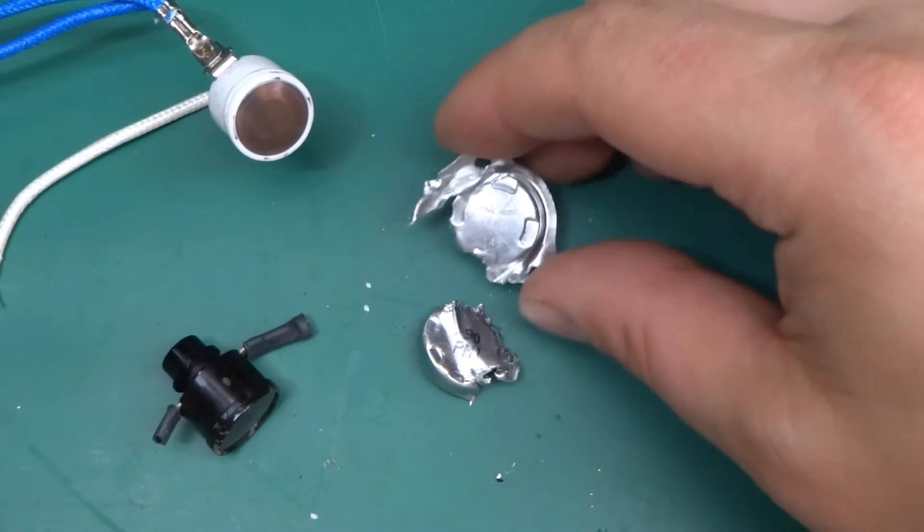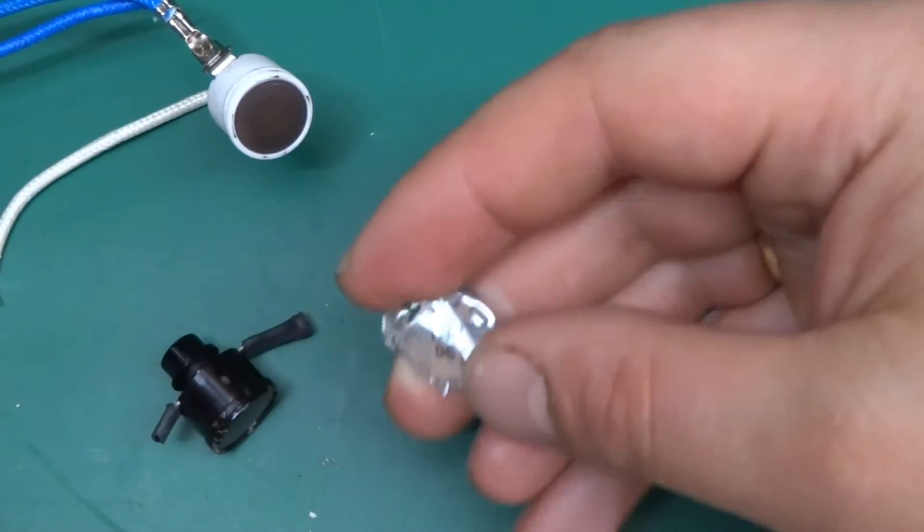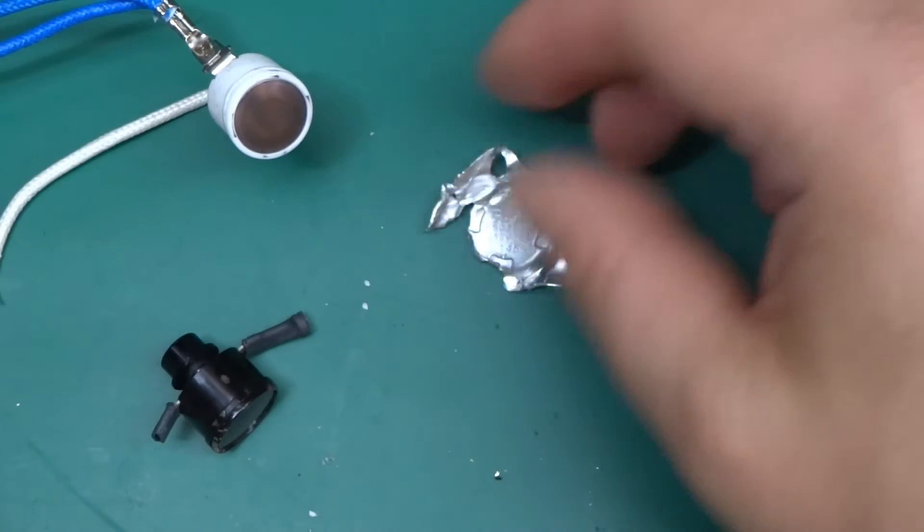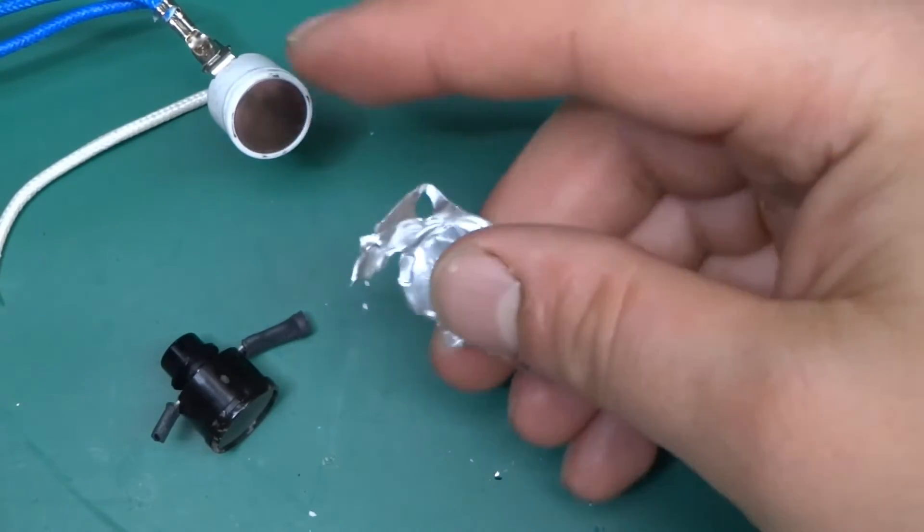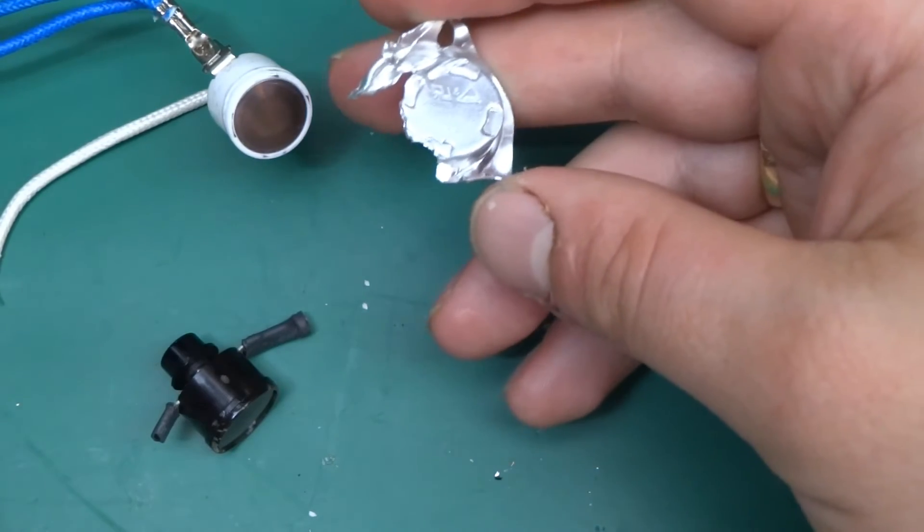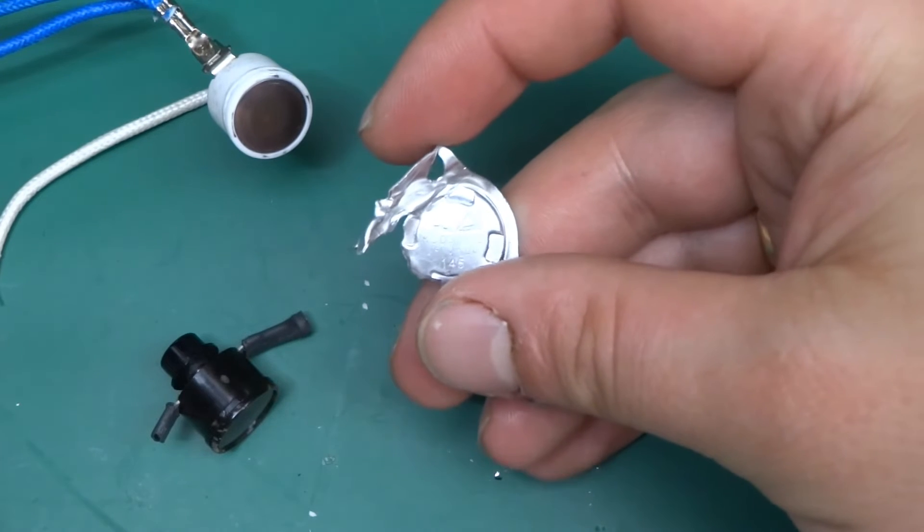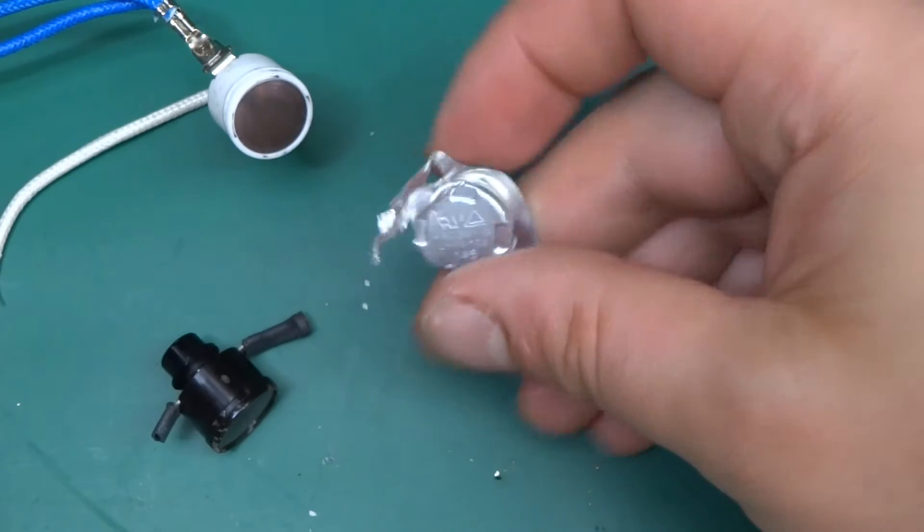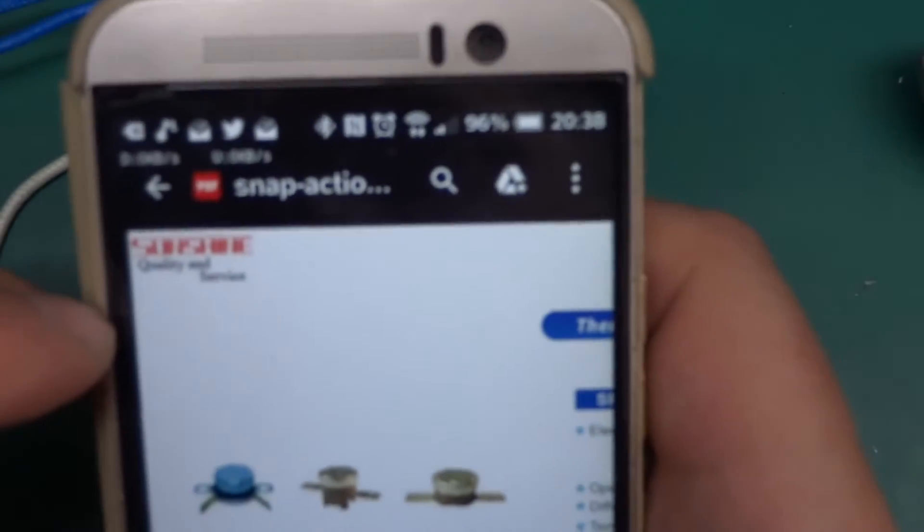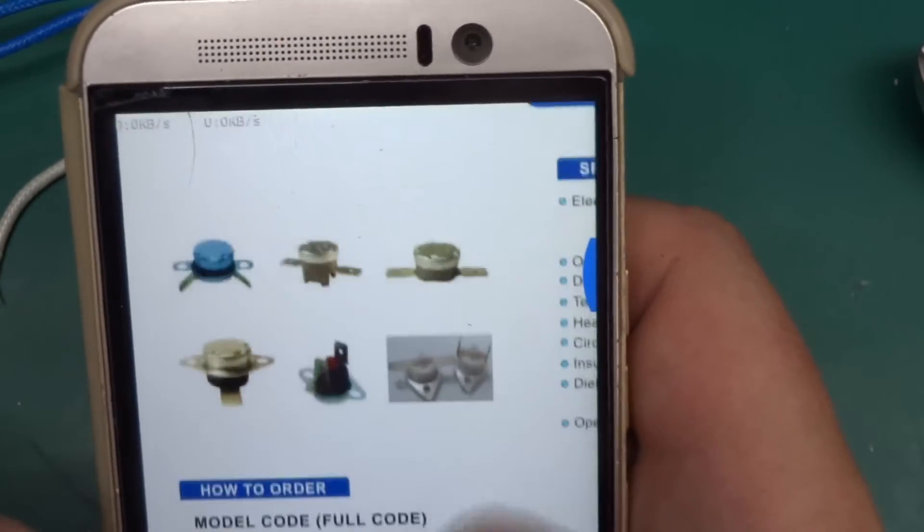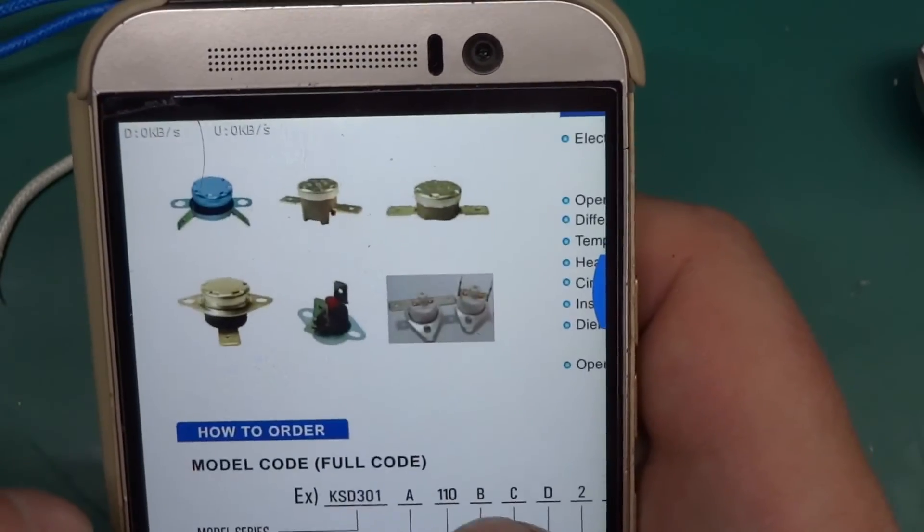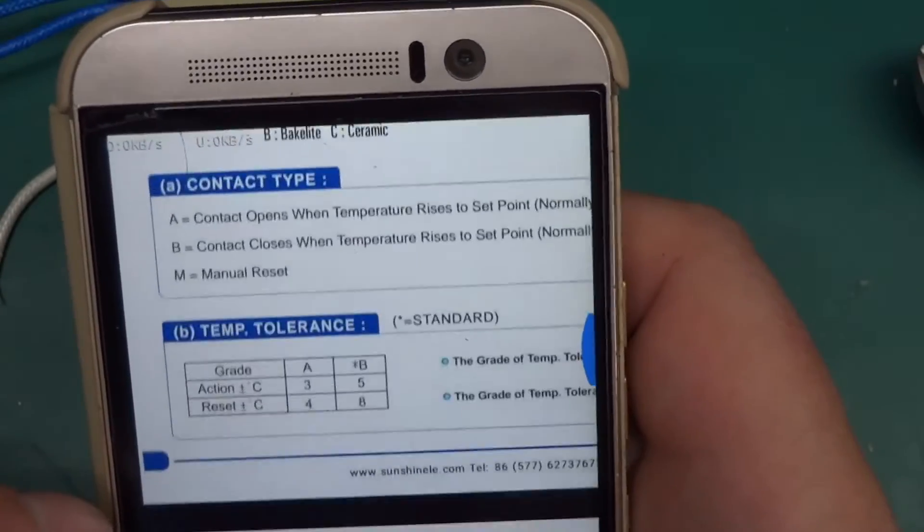By the way, the small black one that requires a reset has the marking 90 PM-1. I looked for that online but it brings up a whole bunch of strange results. The other one, however, which came out of a coffee maker, is marked KSD 301. A quick search on Google revealed the spec sheets from Sunshine Quality and Service. It's a thermostat KSD 301 - there are different variants and models with different current ratings and different temperature settings and connectors and mountings for different applications.